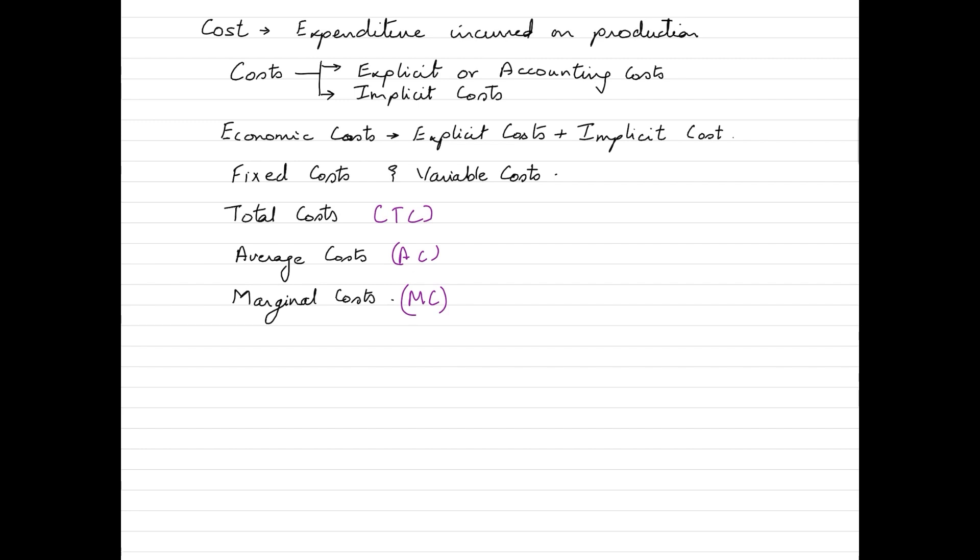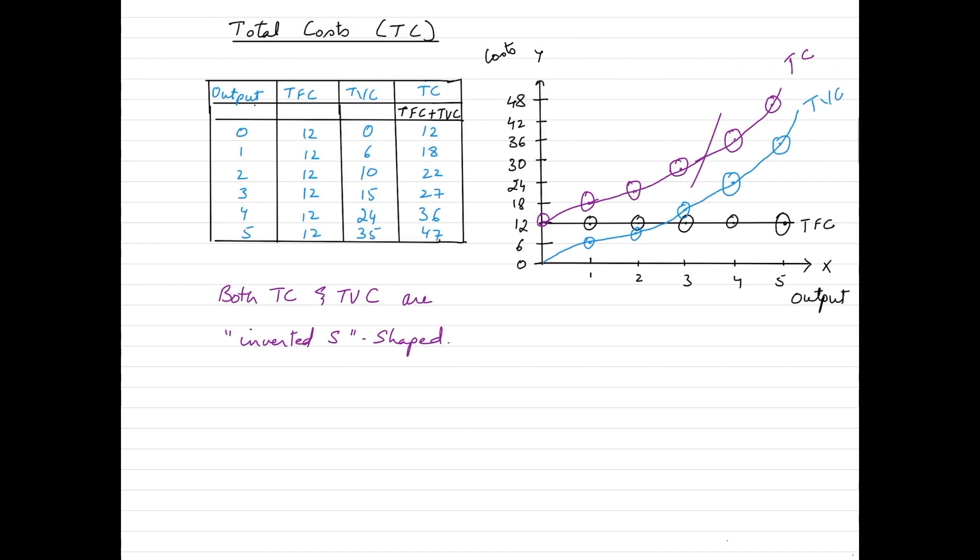Today in this video, we'll be focusing on total costs. As mentioned earlier, total costs is basically the total expenses incurred by the firm on production of goods and services. And it has two components to it. The first component is total fixed cost, which we just discussed in the previous slide and total variable cost.